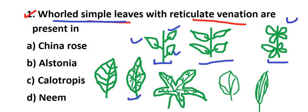Looking at the options: Neem has compound leaves, so it is not possible. Calotropis has opposite phyllotaxy, so not possible. Alstonia gives simple leaves with reticulate venation, so this is the right answer. China rose has alternate phyllotaxy, so it is not our option. The correct answer is option B — Alstonia.